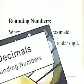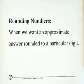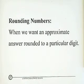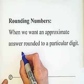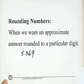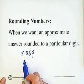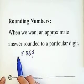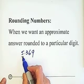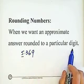For rounding numbers, when we want an approximate answer rounded to a particular digit — for example, the number 5.369, you want to get the approximate answer rounded to, say, 5. So this means rounding to a particular digit.